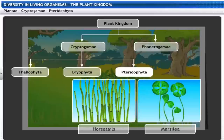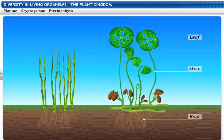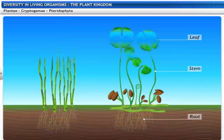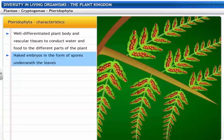Unlike thallophytes and bryophytes, the plant body of Pteridophytes is differentiated into stem, leaves and roots. They also have vascular tissues to conduct water and food to different parts of the plant. Like thallophytes and bryophytes, these plants also have naked embryos in the form of spores underneath the leaf.